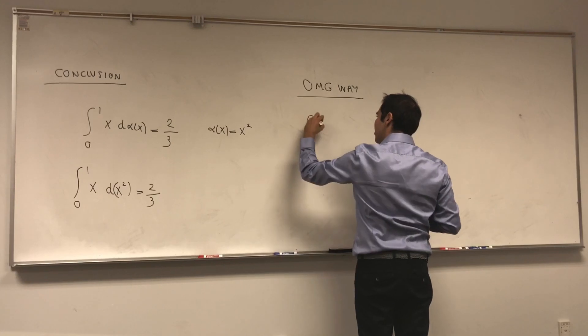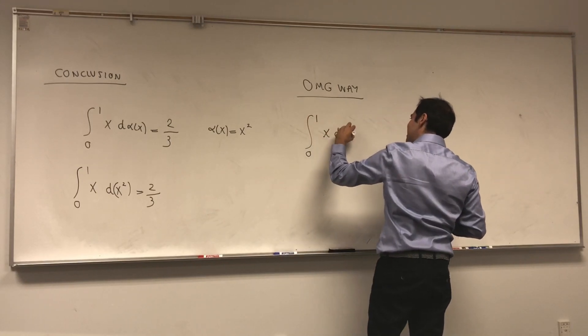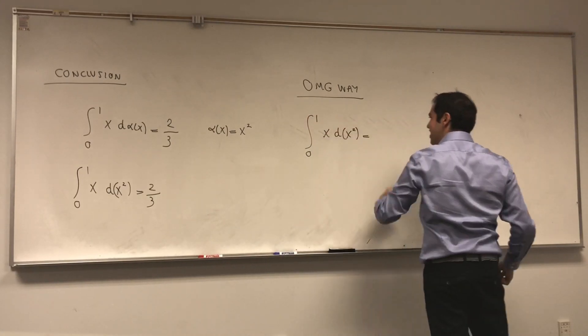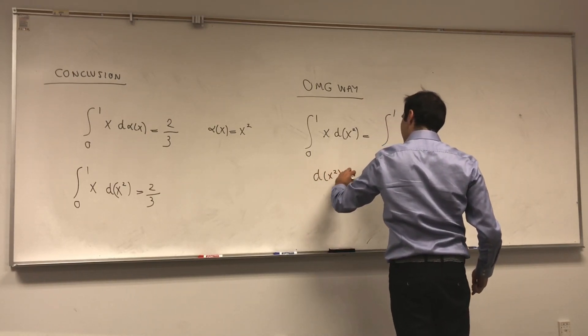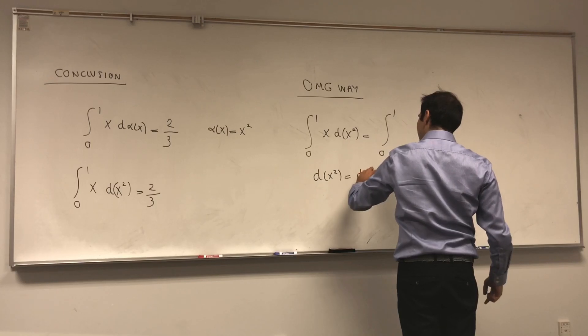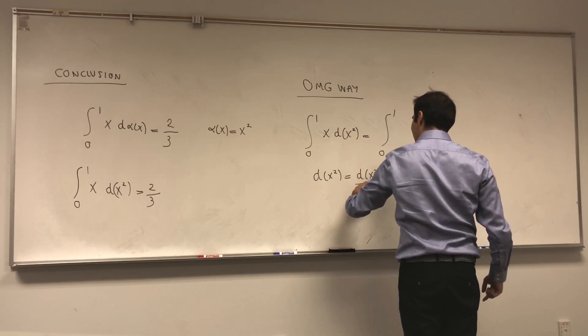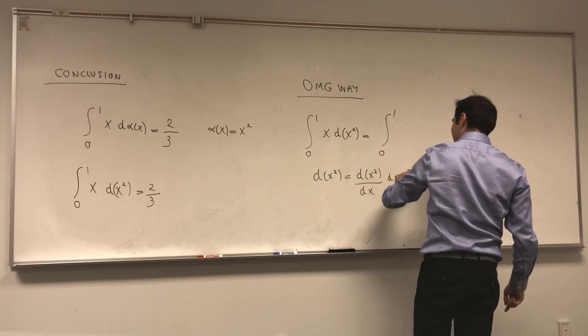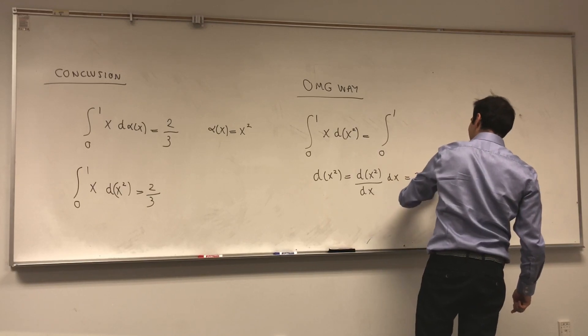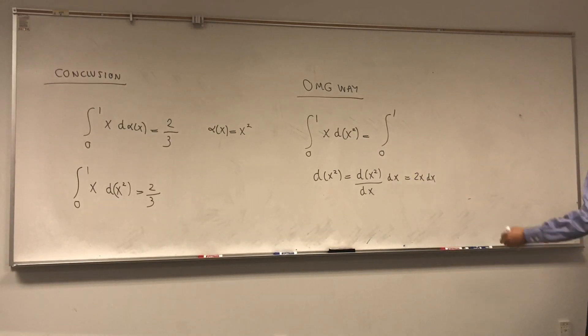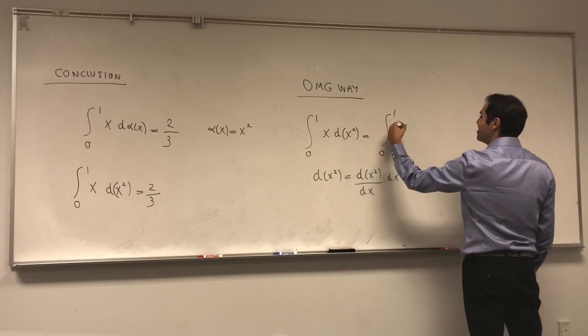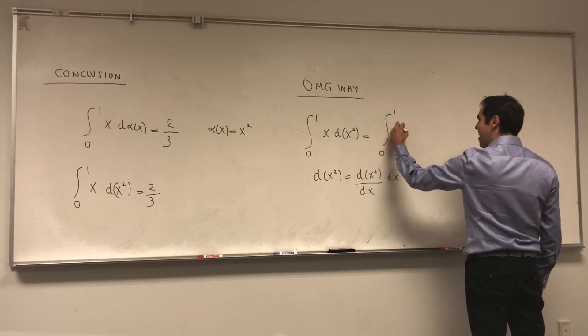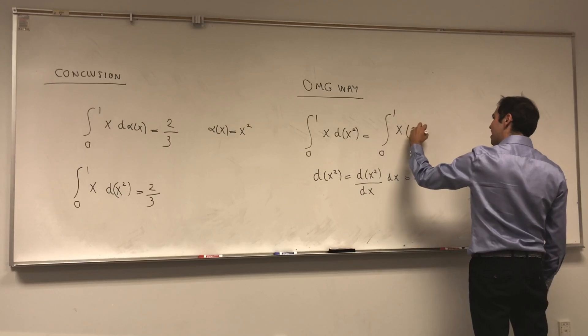Oh my god way. Integral from 0 to 1 x d(x squared). By the chain rule. d(x squared). That's like d(x squared) over dx times dx. That's 2x dx. It's not quite a chain rule, but it is a chain rule. Whatever I'm talking about. Okay. It's a substitution, strictly speaking.